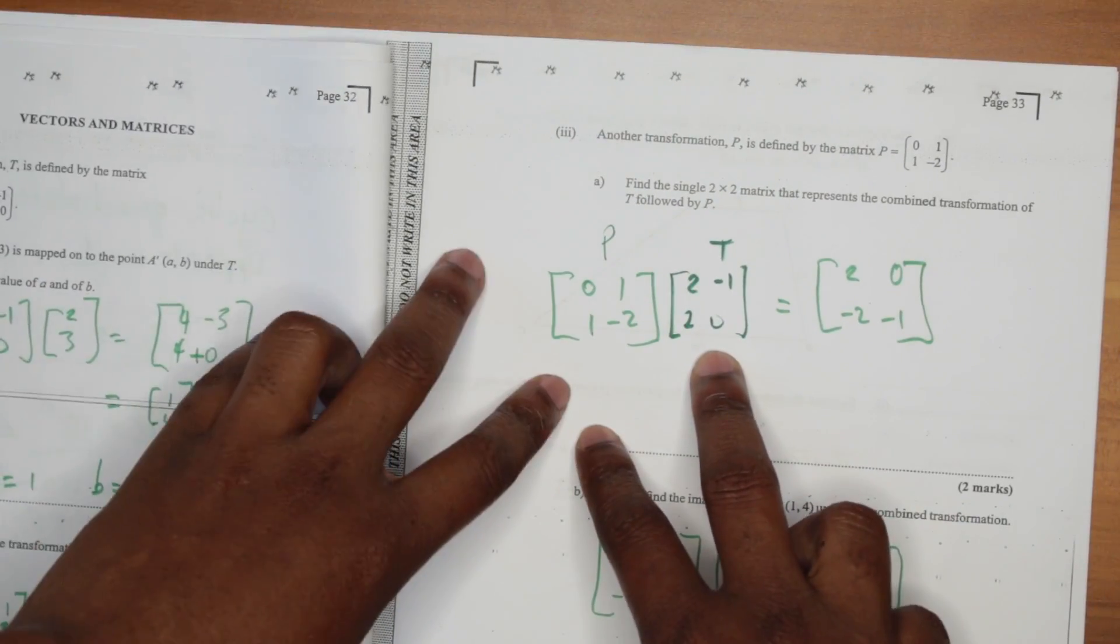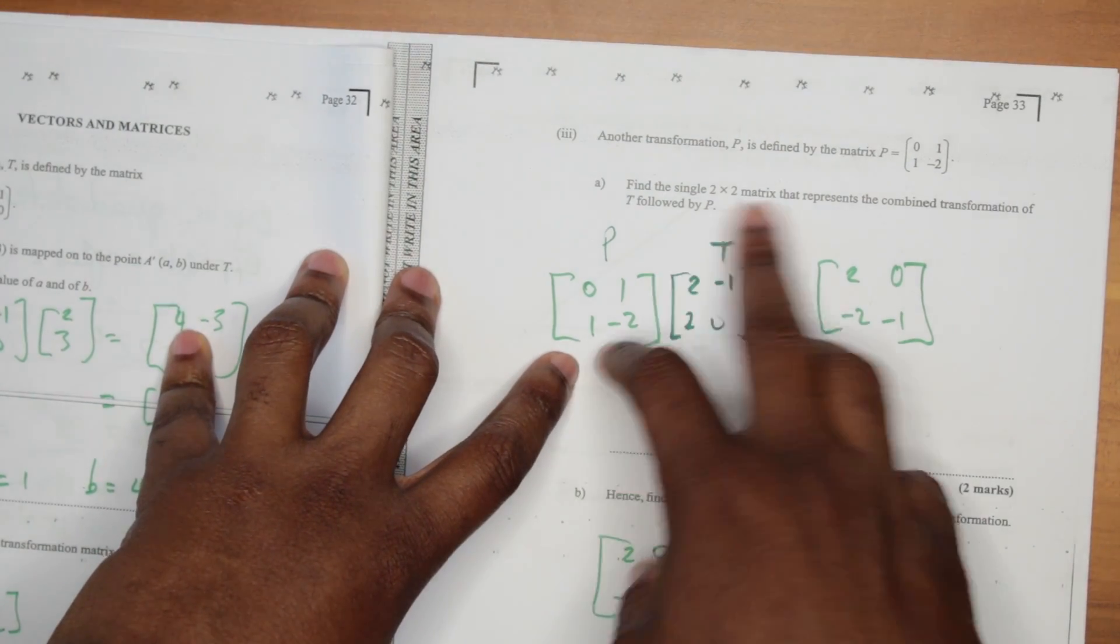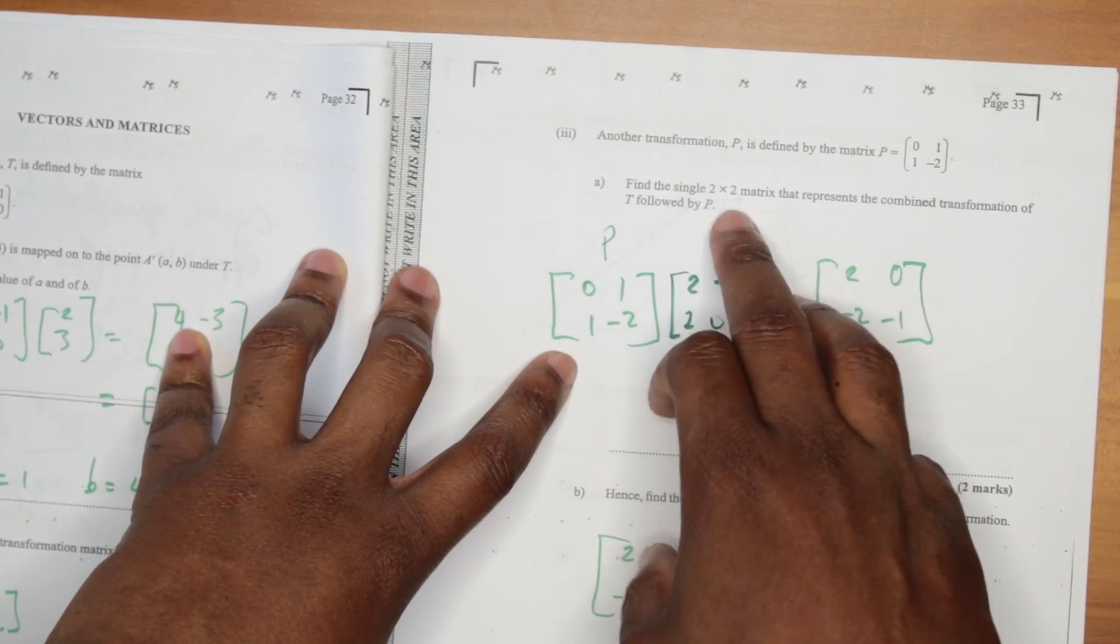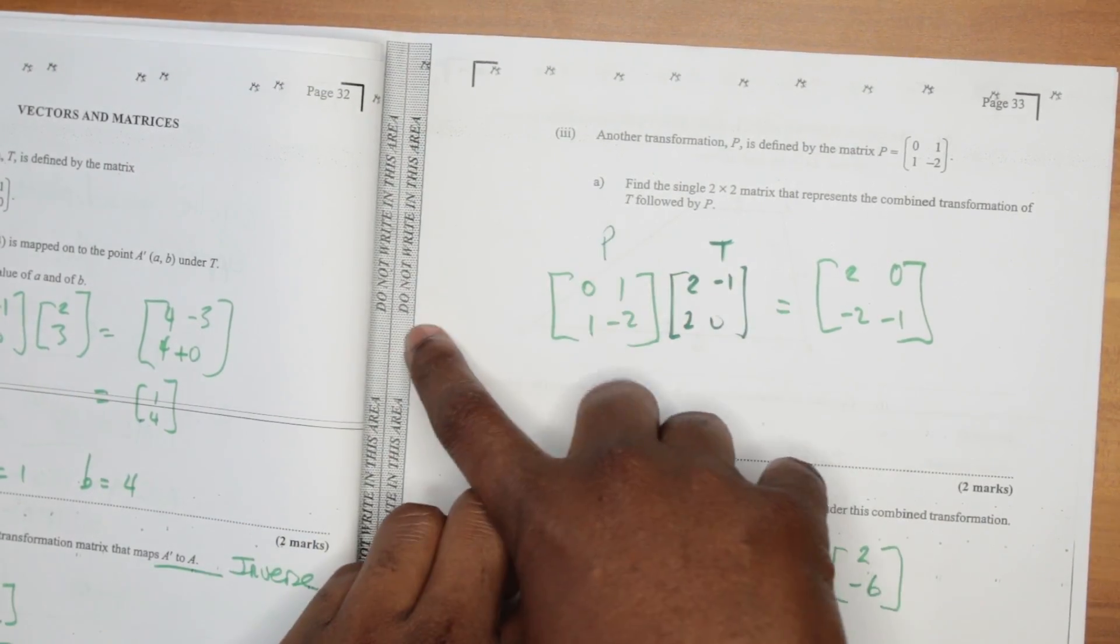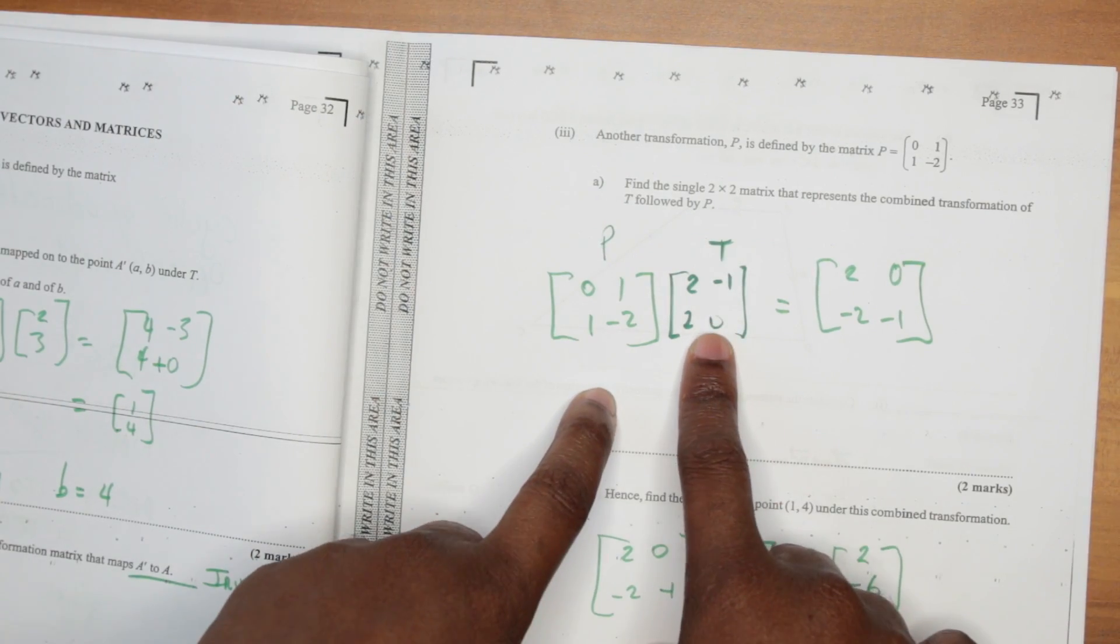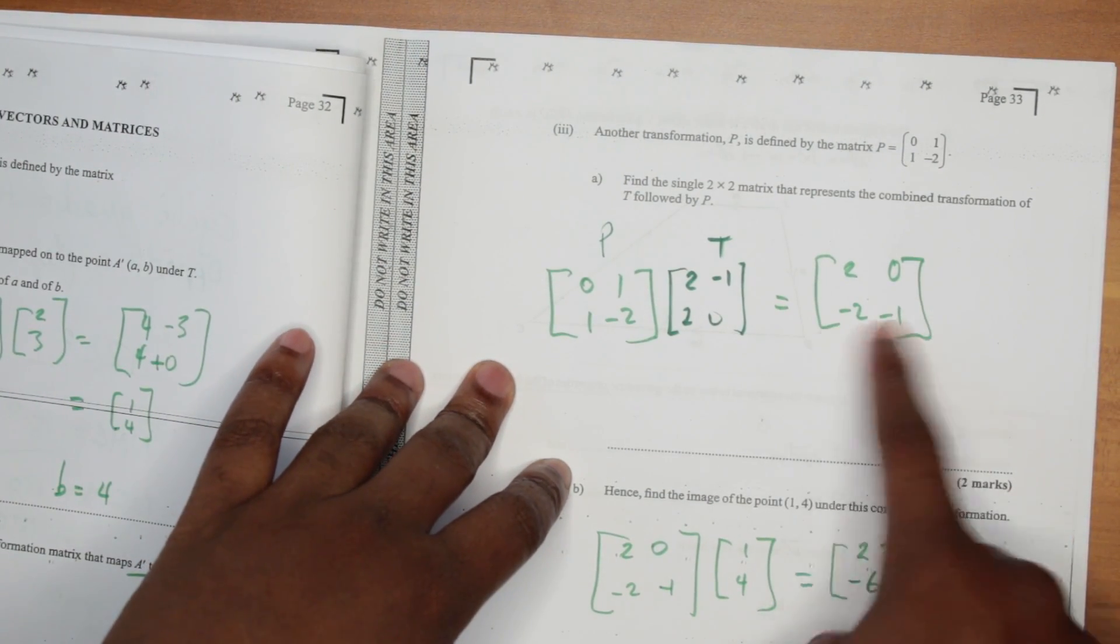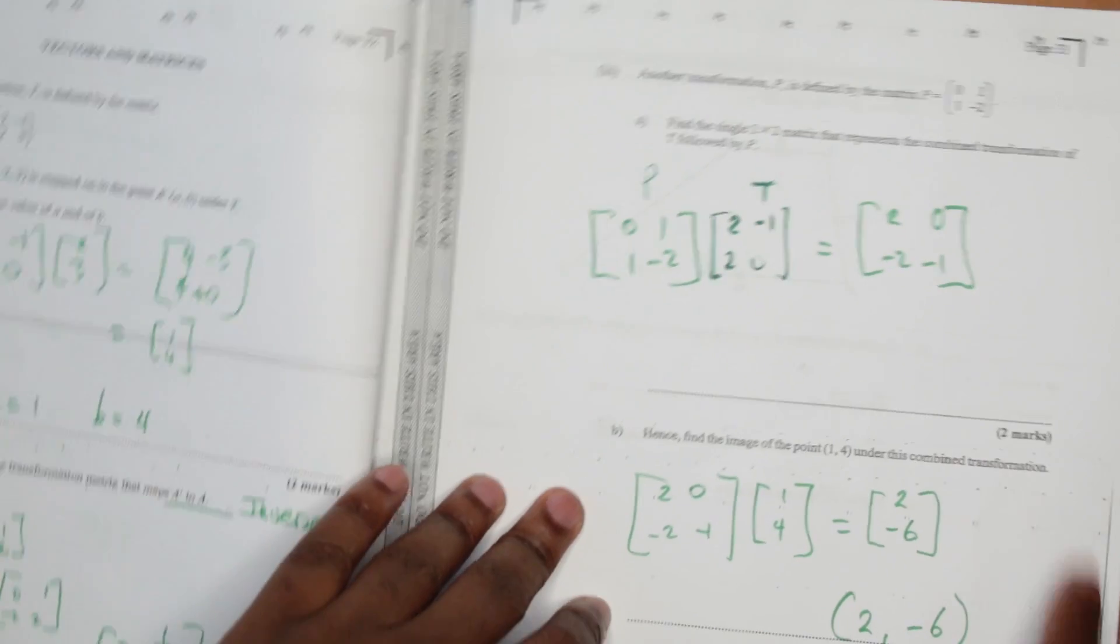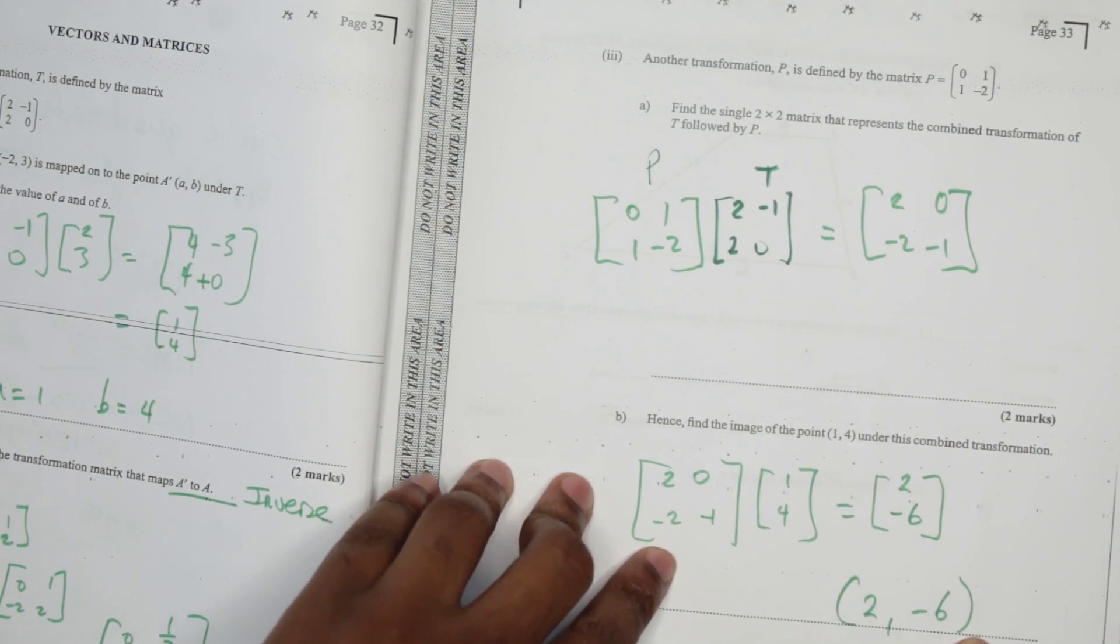And this one is a combined transformation. To do a combined transformation. They said the transformation of T followed by P. So it's T followed by P. It's important. Which order you put there? You can't put TP. You have to put PT. T followed by P. You understand? Composite stuff. And then you get that matrix. Which is the new transformation stuff. Which you got 2 marks for. And then you just need to multiply that by this point. To be able to get the answer here. And that's the end of your exam.